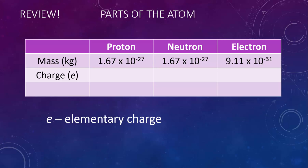The elementary charge is the smallest individual charge that can exist in the universe. Before, if you described the proton as positive 1, what you meant was positive 1 elementary charge. Neutrons, as you know, are neutral — we can call that zero.